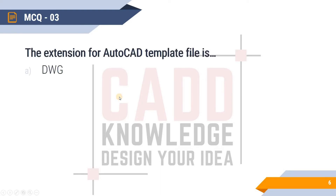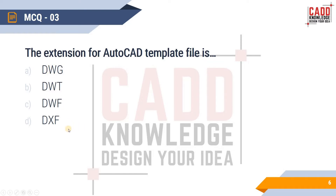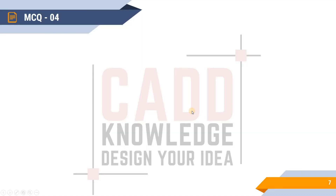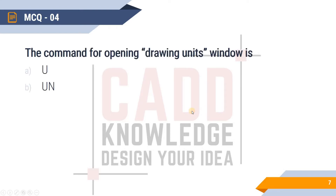MCQ 3: What is the extension for an AutoCAD template file? Options are DWG, DWT, DXF, and DWF. We know the drawing file is DWG. The template file extension is DWT — where 'T' stands for template. So DWT is the correct extension for an AutoCAD template file.